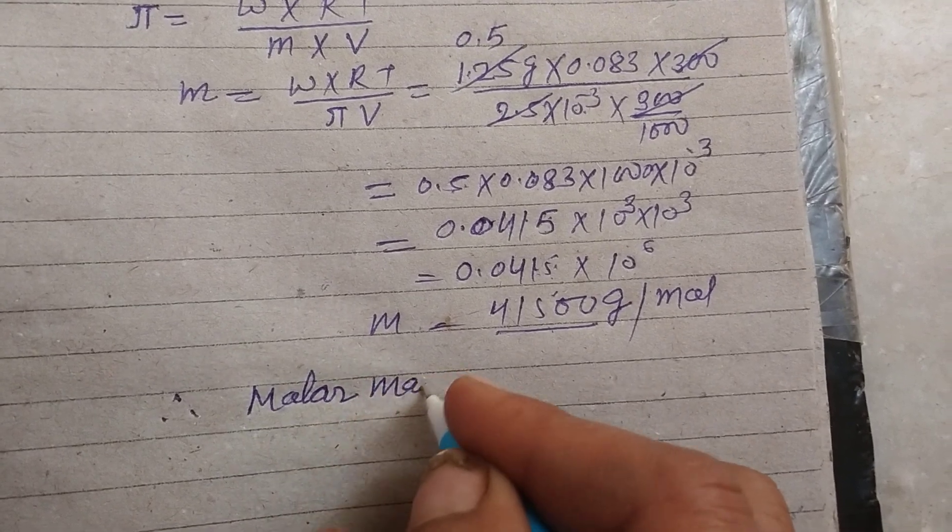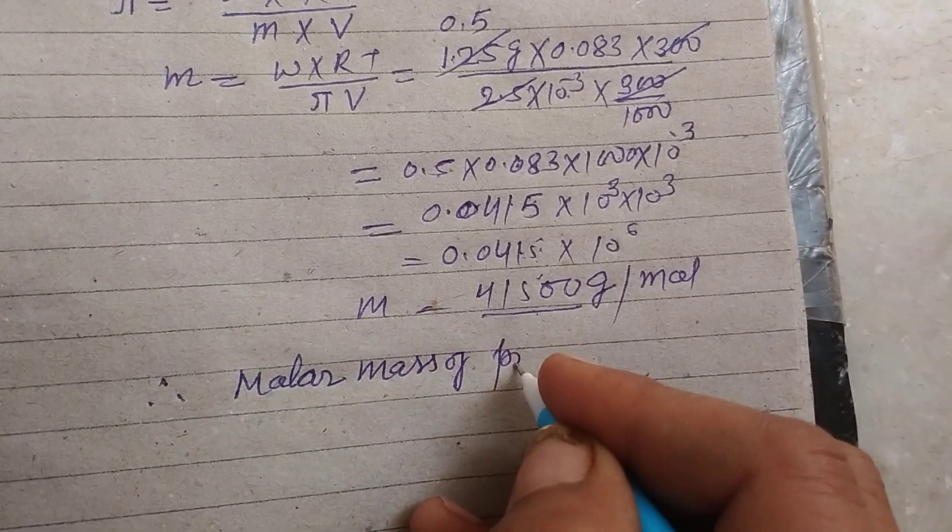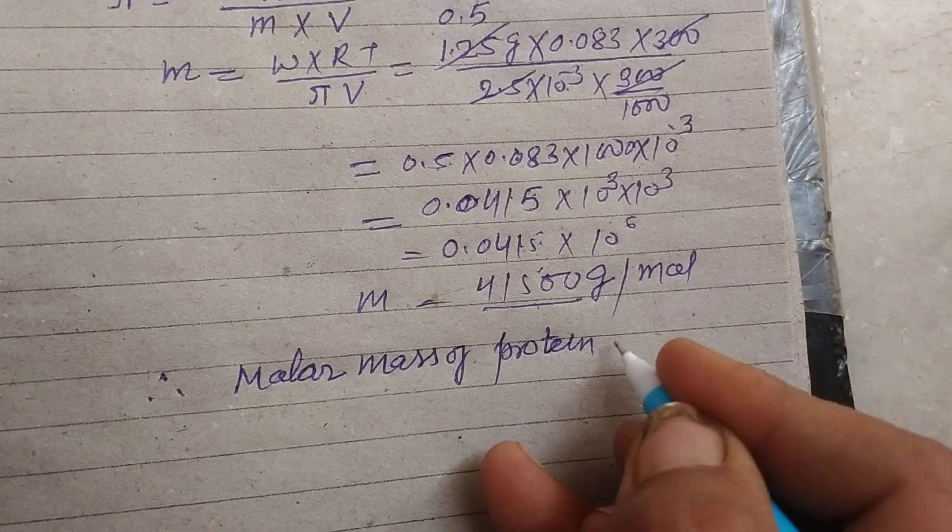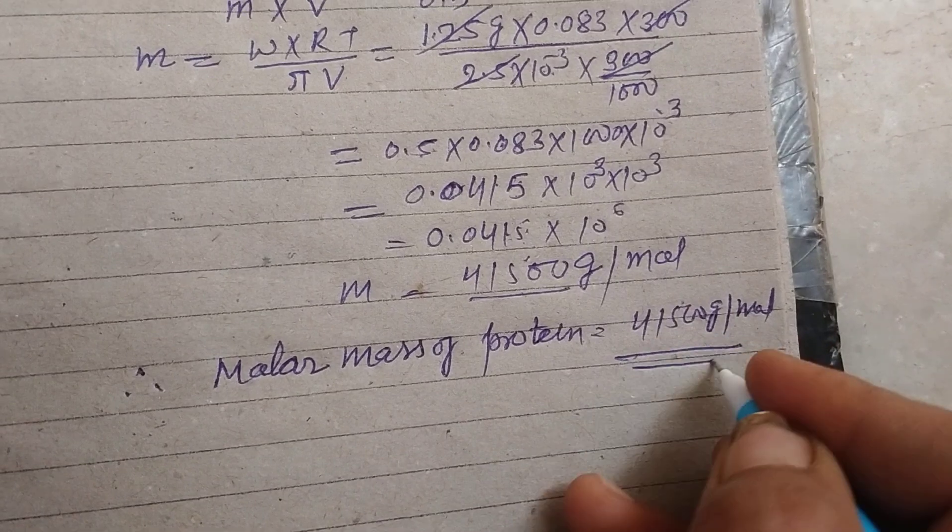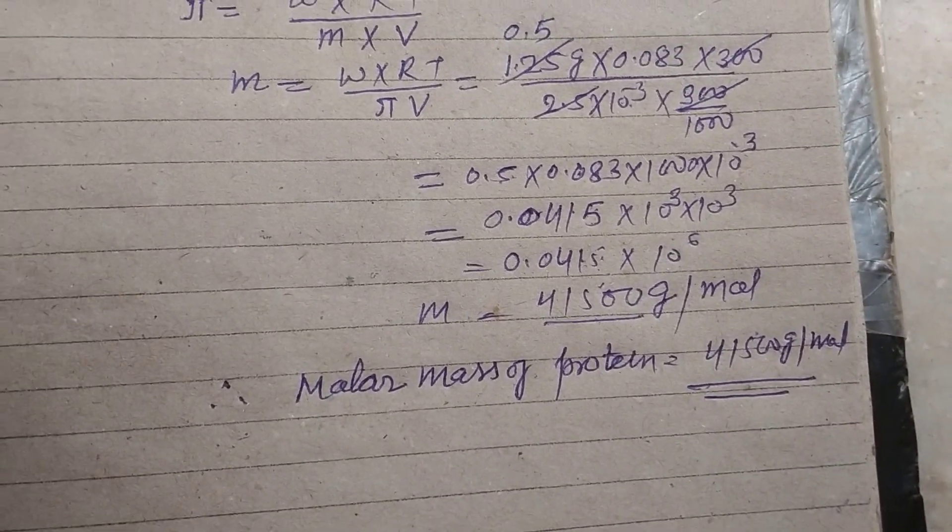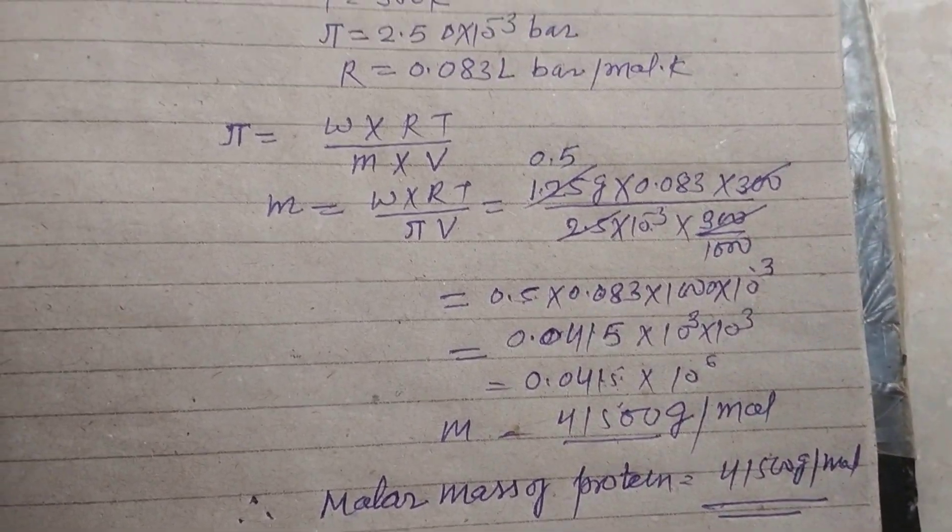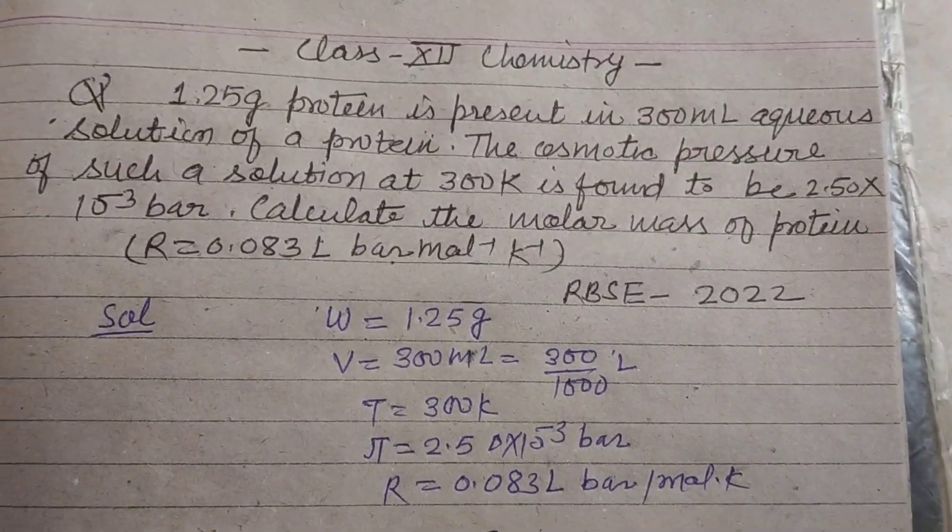Molar mass of protein is 41500 gram per mole. So students, I hope you got it. Please like the video, subscribe the channel. Thanks for watching.